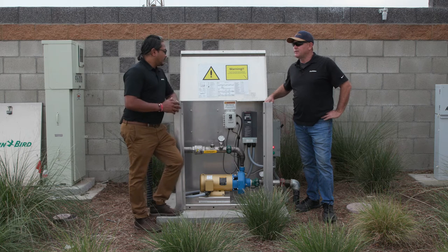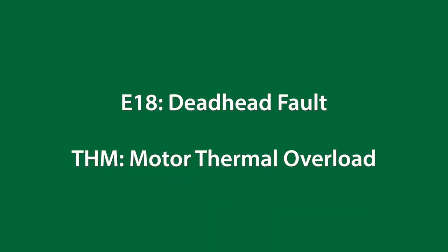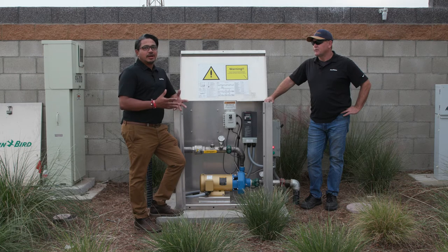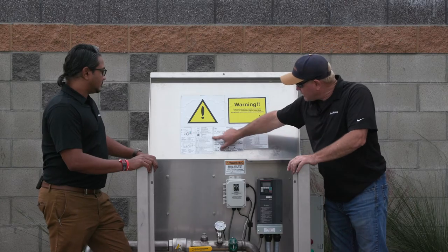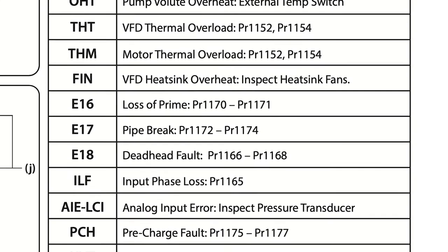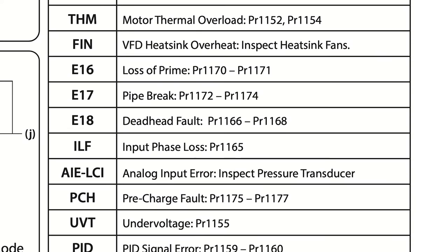We're going to talk about a couple of common errors and faults which you can see on a CLP. Pump station errors are nothing to worry about too much — it's just an indication that the pump station is not running in the right scenario. It's actually protecting the pump and shuts it down so that it doesn't break down or burn out. This quick reference guide covers all the fault codes.